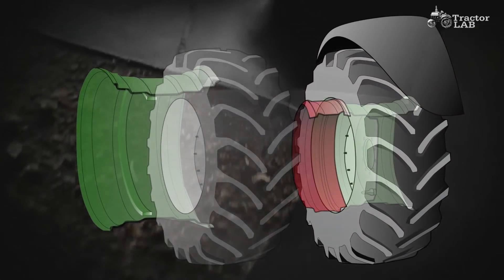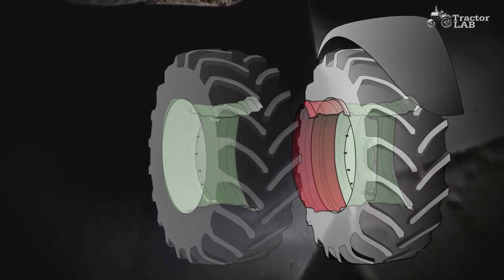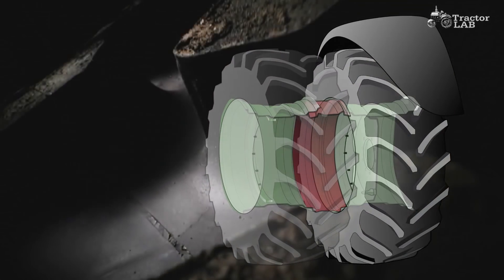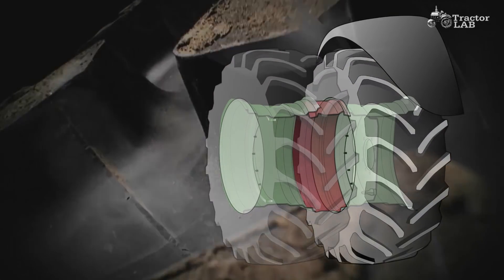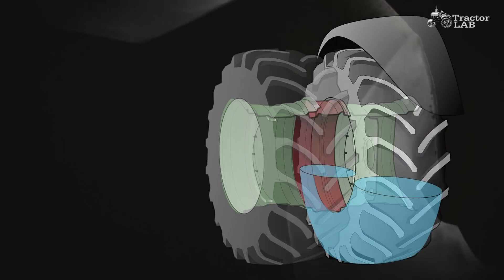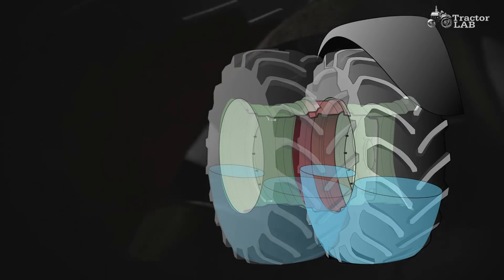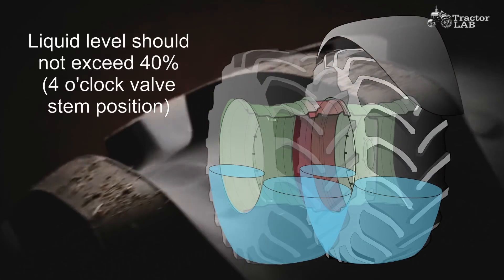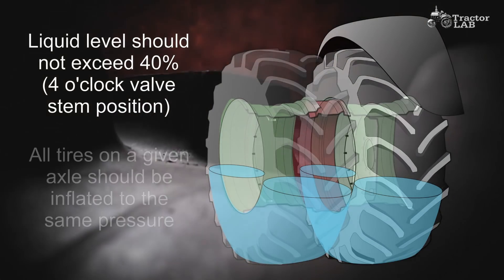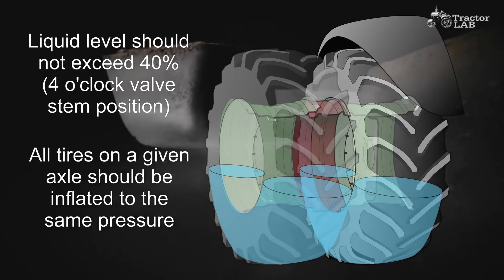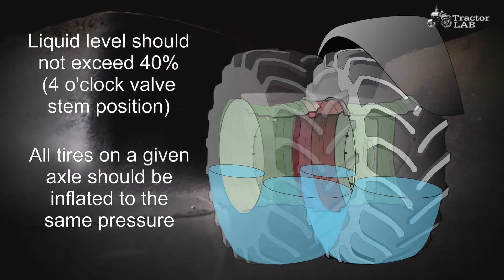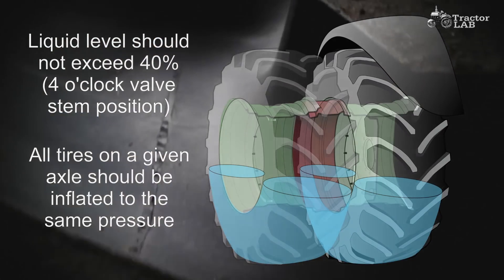Liquid and air fill with duals. A few years ago the recommendation was to put liquid only in the inner tire but new information has changed the guidelines. All tires on an axle should be filled to the same level which should not exceed 40%, or a clock valve stem position. Likewise, all tires on a given axle should be inflated to the same pressure.